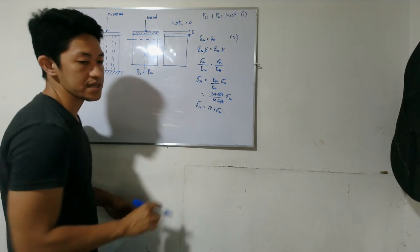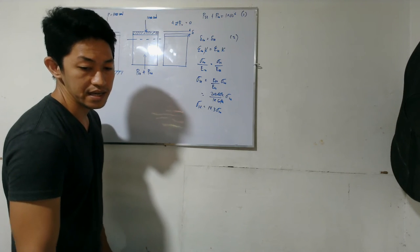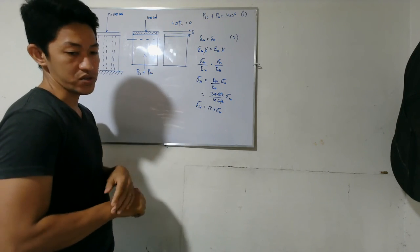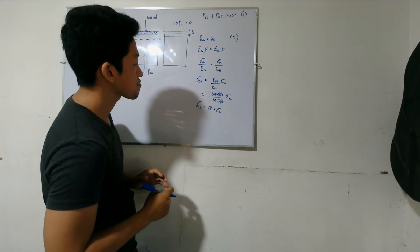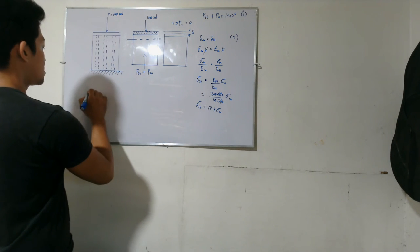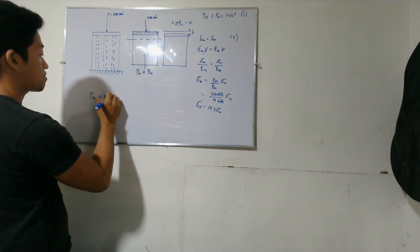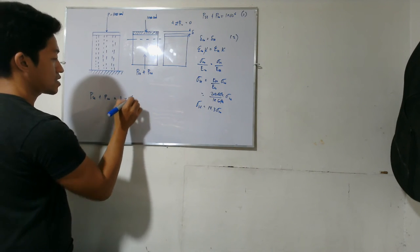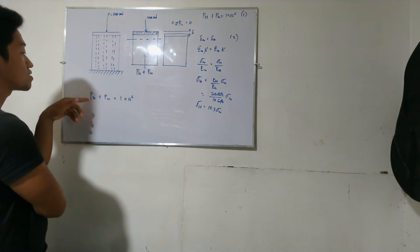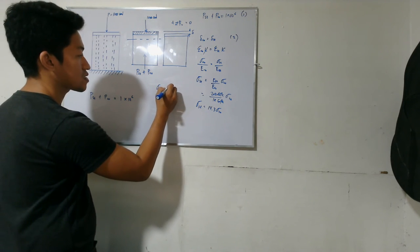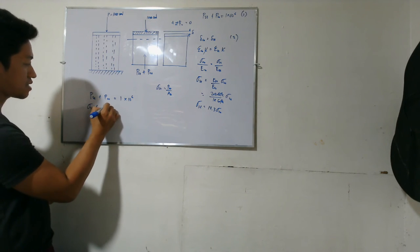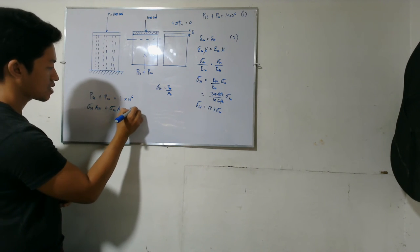Substituting into the equilibrium equation: P_steel + P_concrete = 1 × 10⁶ N, and since force = stress × area: σ_steel × A_steel + σ_concrete × A_concrete = 1 × 10⁶ N. The total area of steel is 6 × 600 mm² = 3600 mm² = 3.6 × 10⁻³ m². Be careful with units.